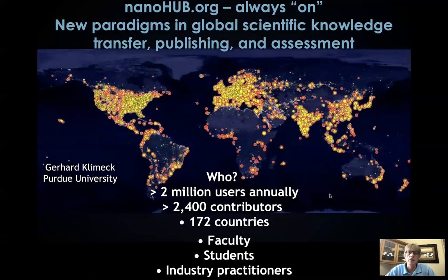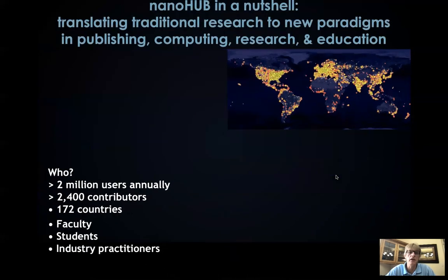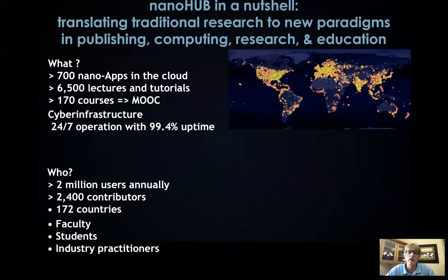If you look at a global picture or a static image, you can see that we really cover the globe with users. Wherever there's a civilization that can light up the night sky with light, we have NanoHub users — people interested in nanotechnology. We have over 700 apps that are tools, simulation apps, running in the cloud without installing anything.